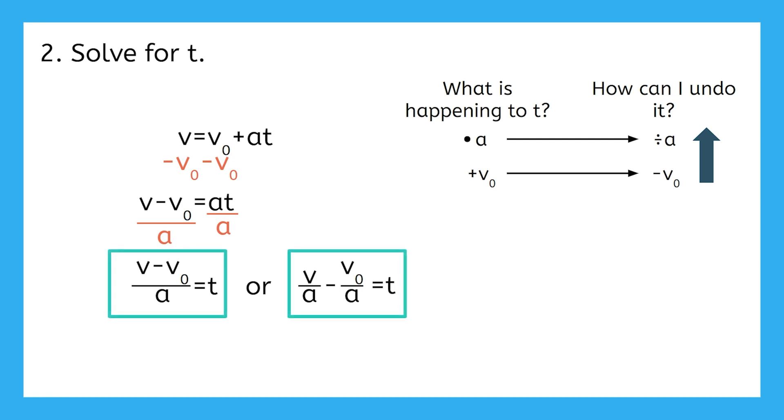But since distributing that division doesn't actually cancel anything or simplify any terms, we don't have to. You may also swap the placement of V and V0 as long as you keep the V0 term negative and the V term positive.